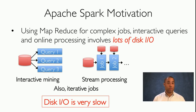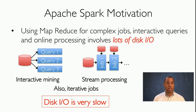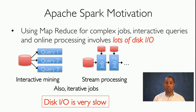This is a motivation for Apache Spark, because it's not just iterative jobs we want to perform in data science, but also complex jobs like interactive mining, stream processing, or interactive queries. In each of these cases we start with some source data, repeatedly read it, perform calculations, and write data back to disk. That high amount of disk I/O means things will run very slowly, because disk I/O is very slow.